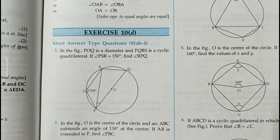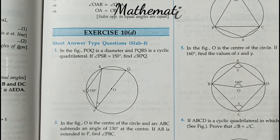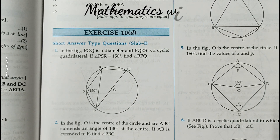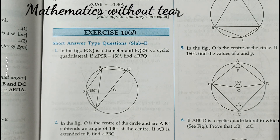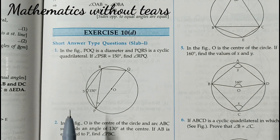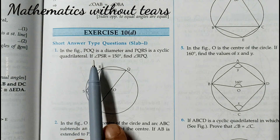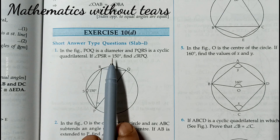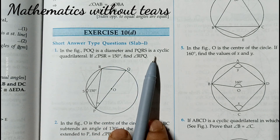Hello students, in my previous video I have done up to 10C, and today in this session I am going to start from 10D. Question number one: in the figure, POQ is a diameter and PQRS is a cyclic quadrilateral.